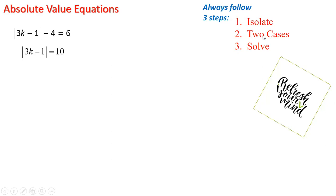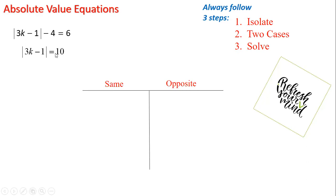Now I go to two cases. In the two cases, I draw a table: same and opposite. What do we mean by same? I take 3k minus one, which is on the first side, equal to 10 in the same. And in the opposite, I take 3k minus one equal to minus 10. So my second side in the same will be positive and in the opposite will be negative.